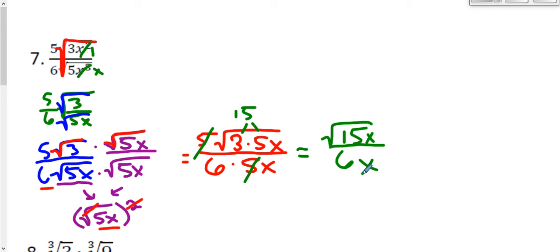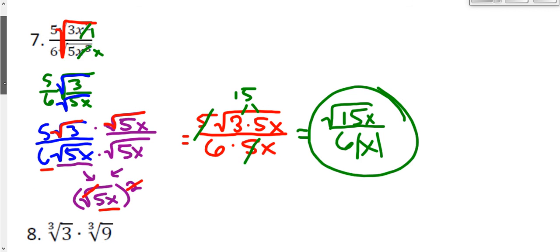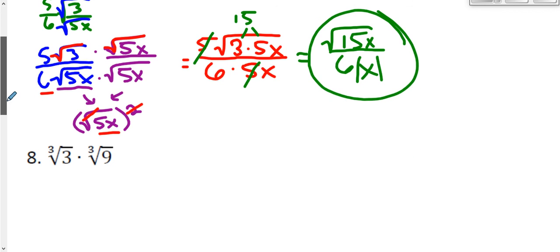So I'm left with the square root of 15x on top and 6x in my denominator. To be very nitpicky, I just did an even root — the second root — and this x is an odd exponent, so I should put an absolute value there. And that problem is finished. Let's go ahead and take a look at a multiplication problem. Multiplication doesn't involve rationalizing because we don't have any radicals in the denominator.